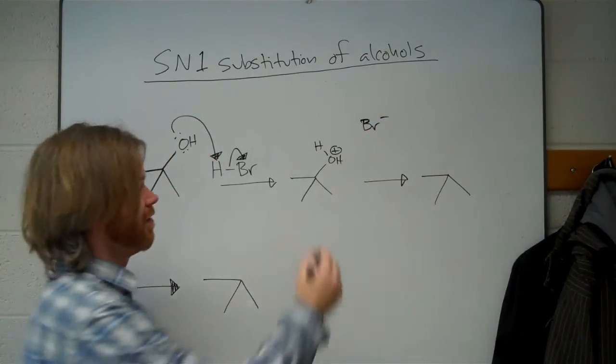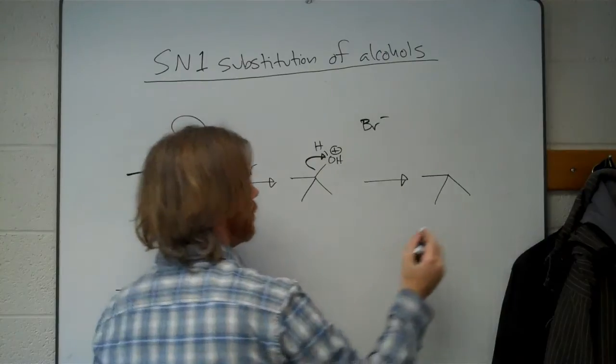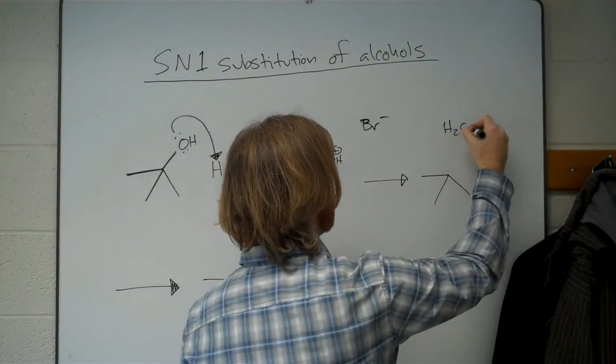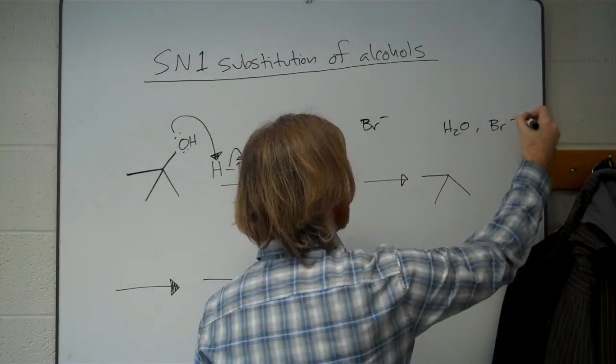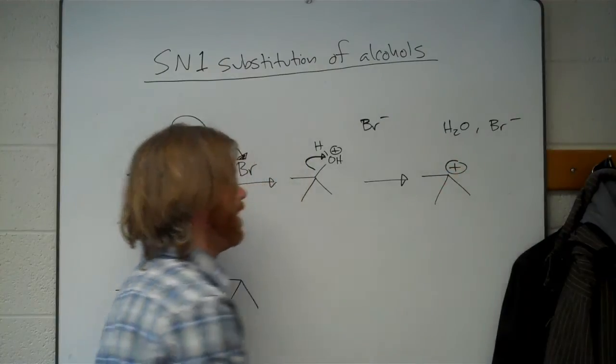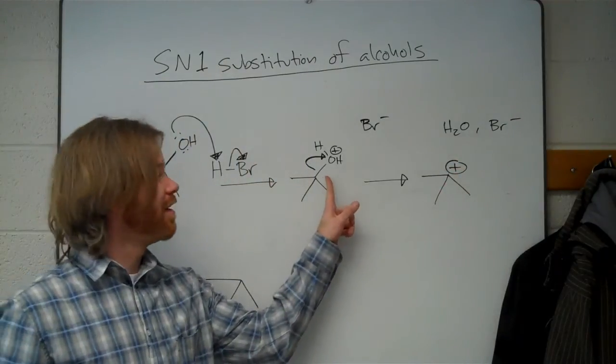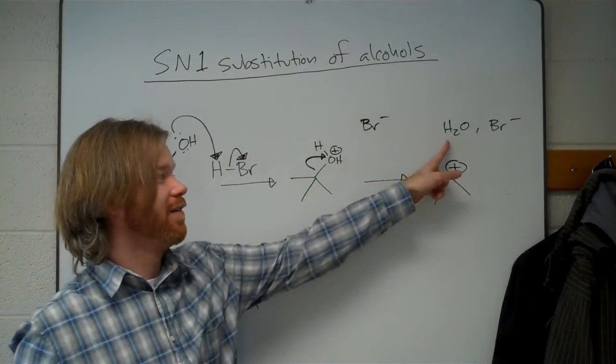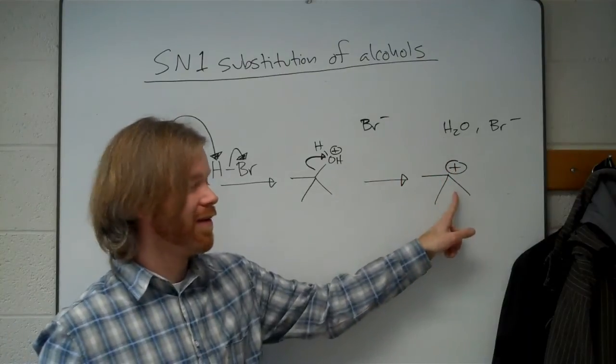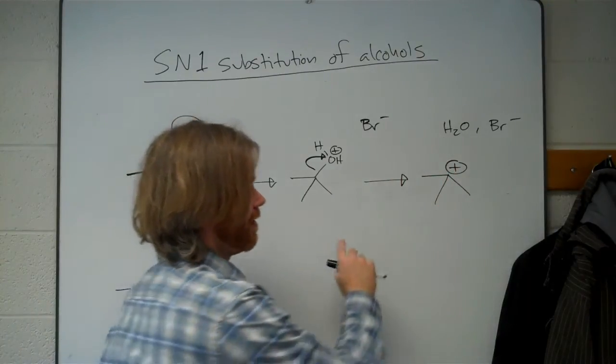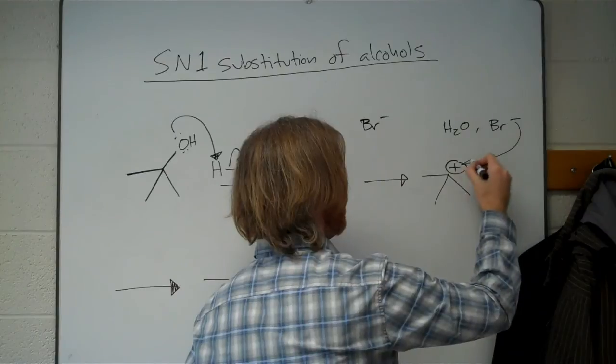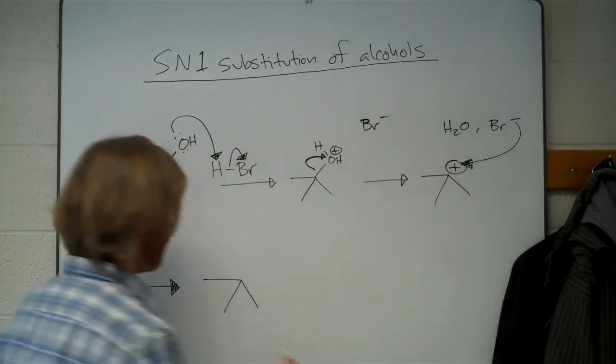So our SN1 mechanism, we use the leaving group first to give us water. And since the bond broke and the electrons went to the oxygen to remake it neutral, then we have a carbocation which then can react with the bromide to complete the substitution.